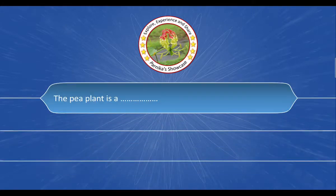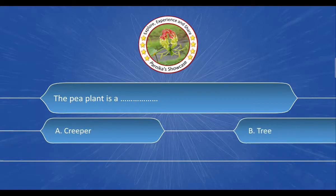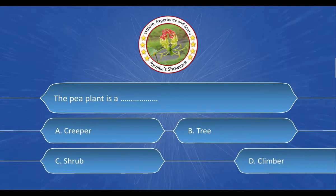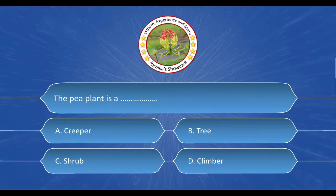Next question: The pea plant is a dash. The options are A. Creepers, C. Shrub, D. Climbers. And the correct answer is Option D. Climbers.